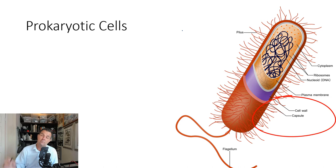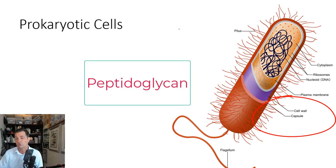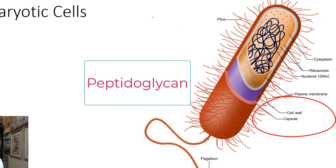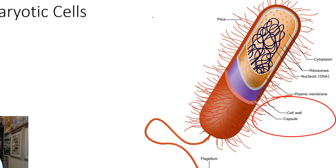Prokaryotic cells also have a cell wall, but it is different from the kind of cell wall that is found in plants. Instead they have a cell wall made up of another type of polysaccharide that is called peptidoglycan.